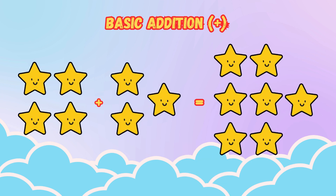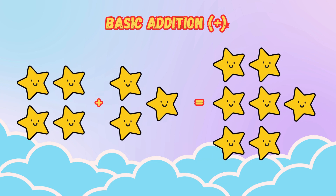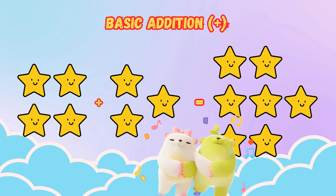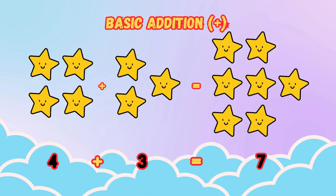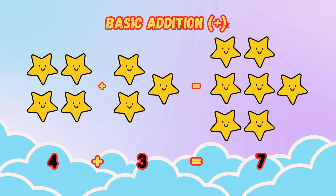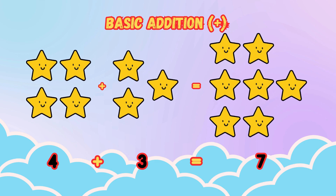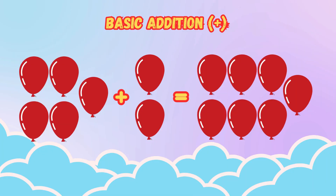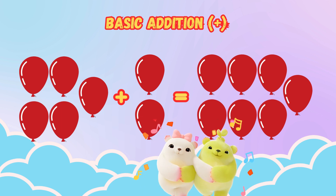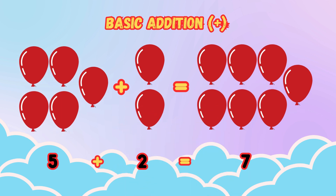Four stars plus three stars is equal to seven stars. Five balloons plus two balloons is equal to seven balloons.